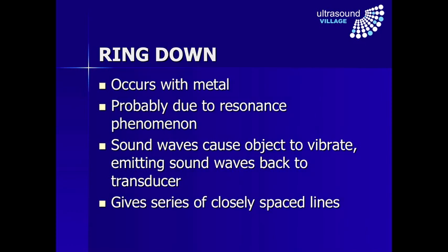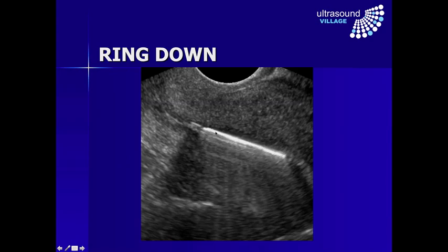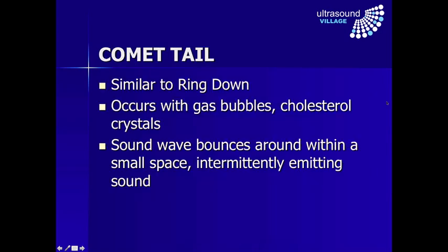Ring down artifact describes two situations. The classic situation is where you have a metallic object — it's thought that the ultrasound beam makes the metal start to vibrate, considered a resonance phenomenon. As the object vibrates it emits sound waves back to the transducer, giving a series of closely spaced parallel lines. Here for example is a metallic infusion device with lots of little parallel lines, and sometimes a little stream of very short parallel lines. A variation sometimes also referred to as ring down is the comet tail artifact — this occurs with gas bubbles and also cholesterol crystals.